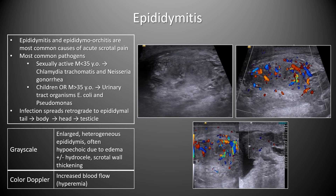Epididymitis and epididymo-orchitis are the most common causes of acute scrotal pain in the adult population. In sexually active men under 35, chlamydia and Neisseria gonorrhea are most common; in children or men over 35, urinary tract pathogens such as E. coli and Pseudomonas are seen. The infection progresses retrograde from the epididymal tail to body, head, and then testis, causing either epididymitis alone or epididymo-orchitis.